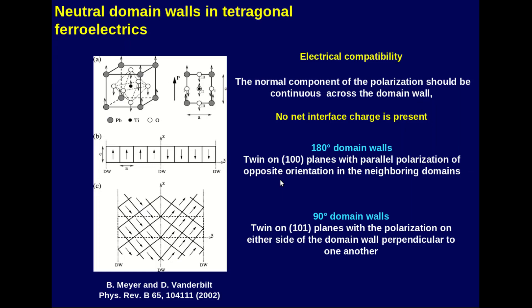Let's discuss domain walls in ferroelectrics, with a focus on tetragonal ferroelectrics. In our case, we used lead titanate, which belongs to the important family of ferroelectric materials based on the cubic perovskite structure. At a temperature of 765 kelvins, lead titanate undergoes a single phase transition from the paraelectric cubic phase to a tetragonally distorted ferroelectric phase, and remains in this phase down to zero kelvins. With the constraint that the normal component of polarization should be continuous across the domain wall — so that no net charge is seen at the interface — we are left with two scenarios: 180-degree domains or 90-degree domains.